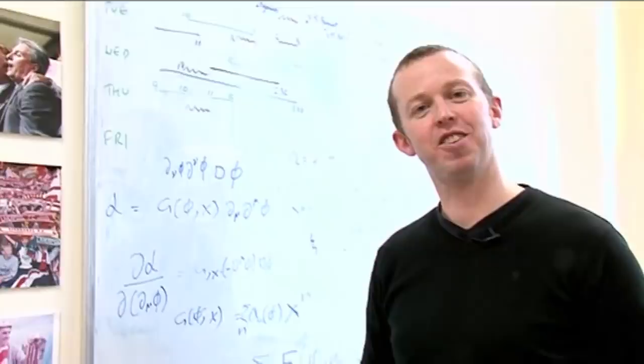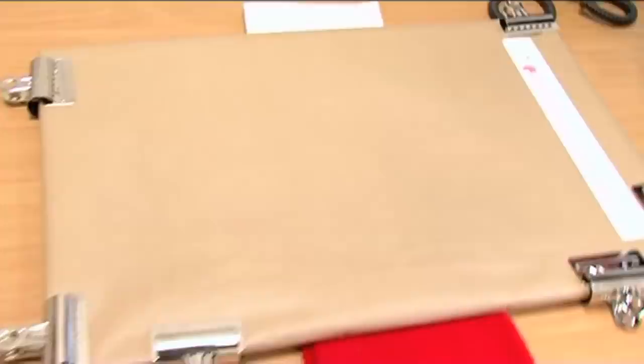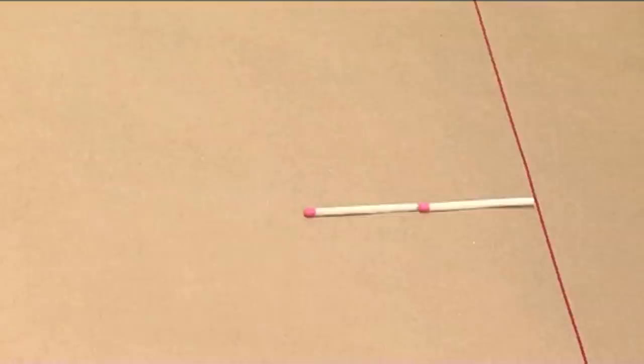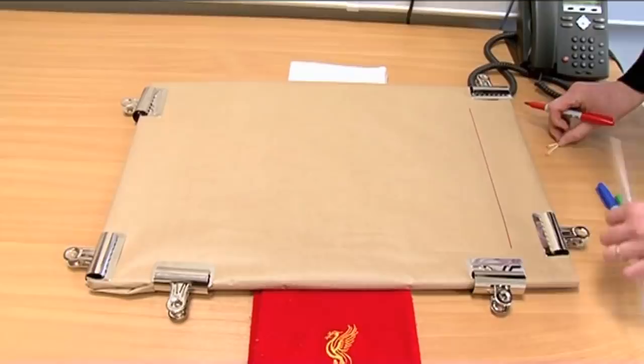So we haven't got needles, and we're not going to do it on a floor. We're going to do it on one of Brady's lovely brown pieces of paper, and we're going to use matches instead because we're cheap. What we want is we want to draw some lines on this. And what we want is the gaps between lines to be two matches long. This is all very approximate.